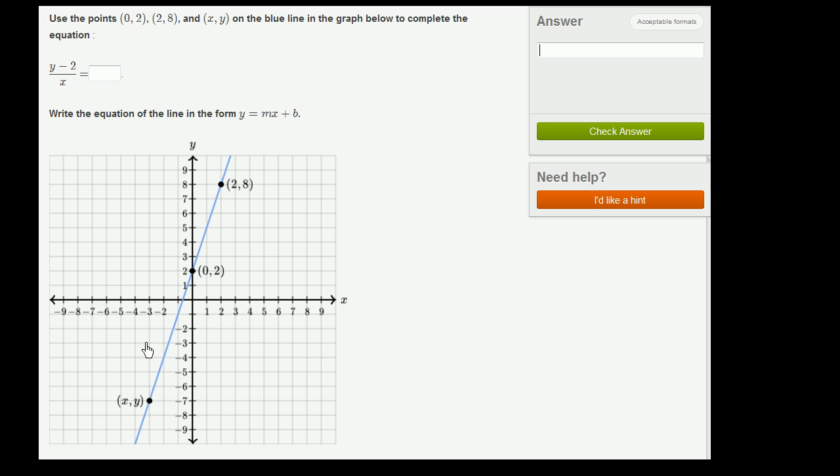So we have a line here, and they give us two exact points and one general point in terms of x, y. We'll assume those are just two general points. What we want to do is figure out what this ratio is, and then we need to figure out the equation of the line. A good place to start is figure out the common ratio between our change in y and our change in x between any two points on the line.